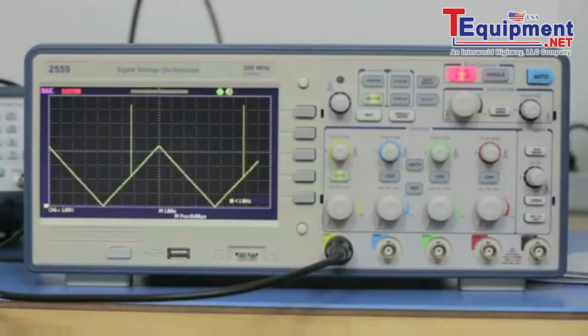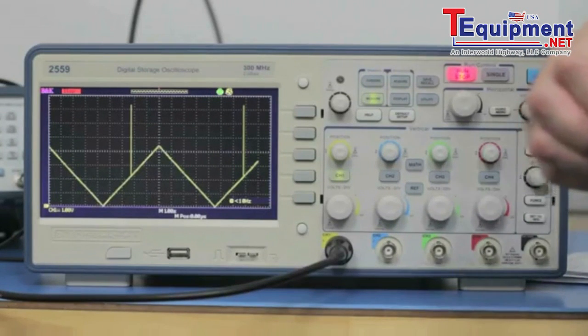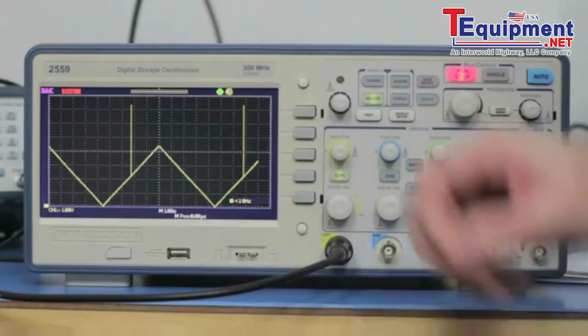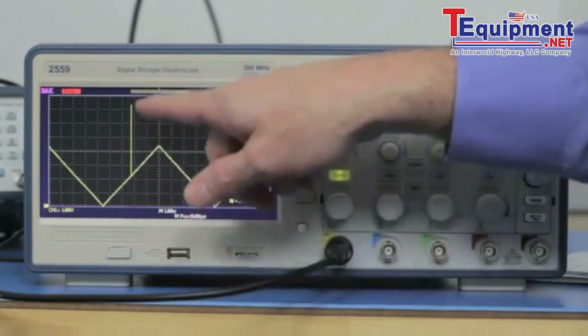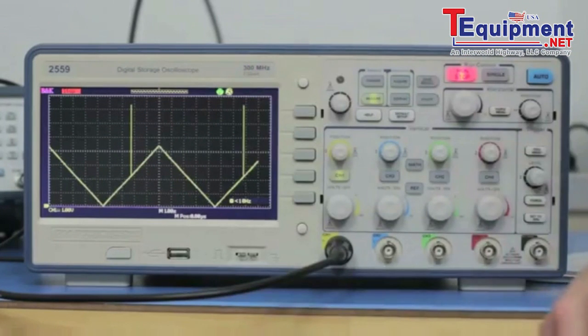So here's the signal that I created from the 4045 arbitrary waveform generator. You can see there it's a ramp wave with this little outlier right there, which is about seven divisions, just over seven divisions at one volt per division, giving us a max value that should be something over seven volts.